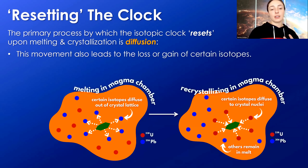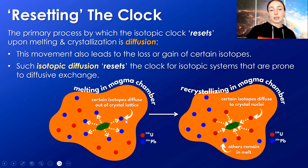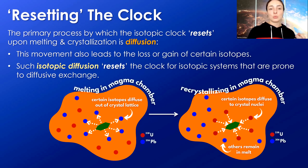The movement of ions to and from grains during melting and alteration can also lead to the loss or gain of certain isotopes, because each one of these ions represents a specific isotope. Such isotopic diffusion resets the clock for isotopic systems that are prone to diffusive exchange, because the daughter isotopes — in this example the blue dots or lead — diffuse out of the crystal during melting or alteration, allowing the parent isotopes — in this case the red dots or uranium — to diffuse back into the crystal.